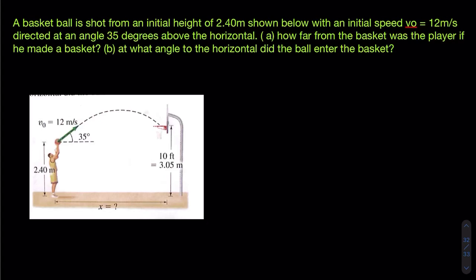Hello everyone. Here is a projectile problem. A basketball is shot and enters a basket, and we are supposed to find the distance from the player — the point that the basketball is shot — to the basket. The height the ball is shot from is 2.4 meters, the initial velocity is 12 meters per second, the angle with the horizontal is 35 degrees, and the height of the basket is 3.05 meters.